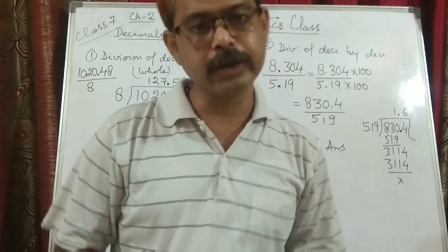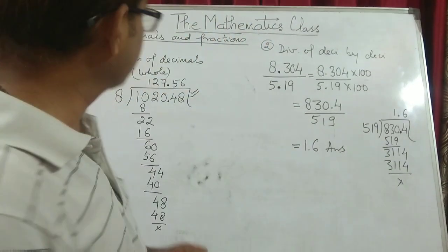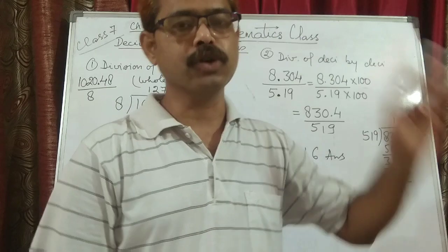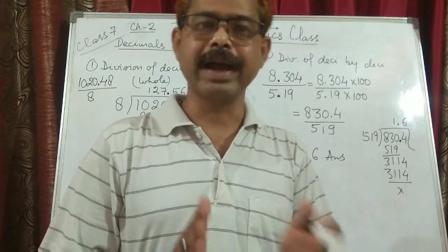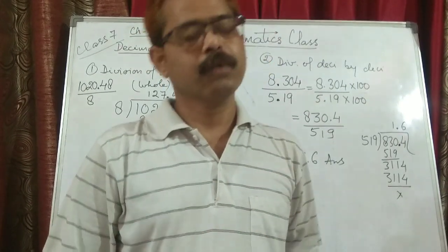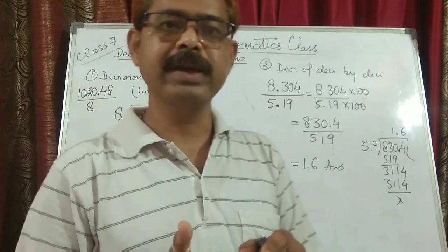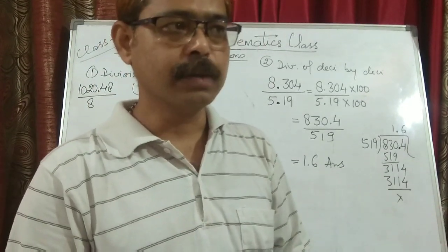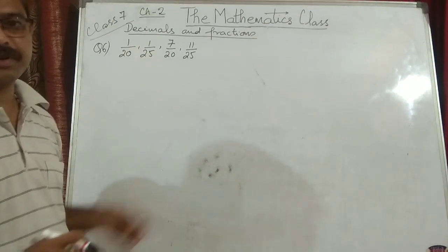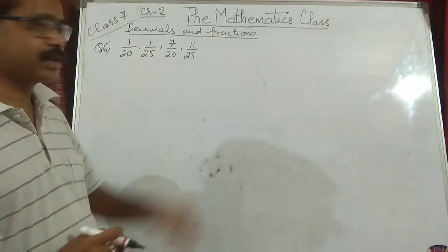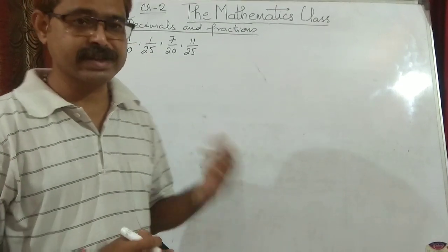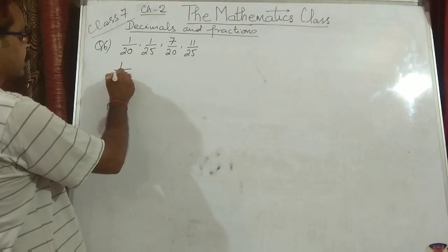Let's see what the next topic is. I hope all the topics have been covered. Now we will be moving on to Exercise 2C. I will be discussing some problems on the board, and I expect everybody to write those problems in your fair notebook. Whatever questions are left will be done by you in your practice register. Now I have taken question number 6, which reads: write these fractions with denominator 100 and express them as decimals. I am talking about 1 upon 20.